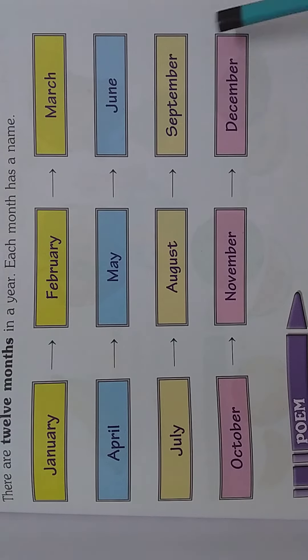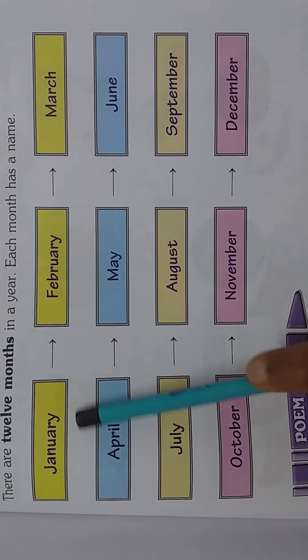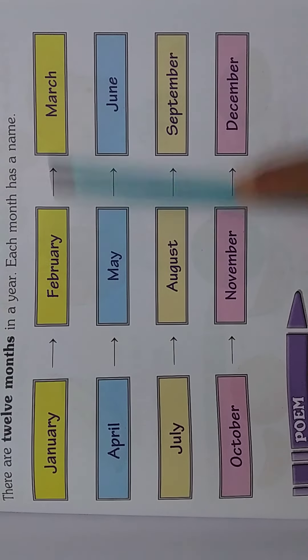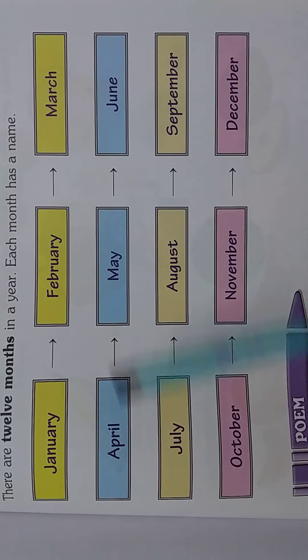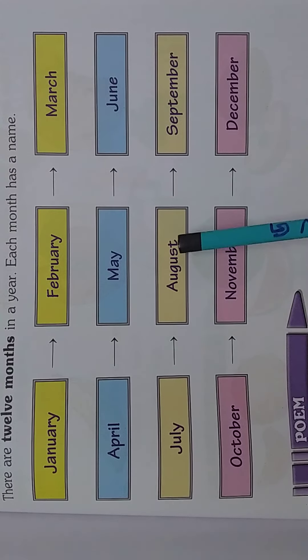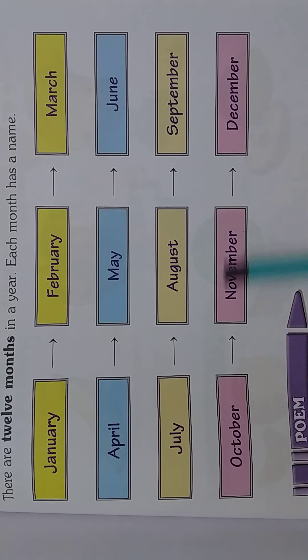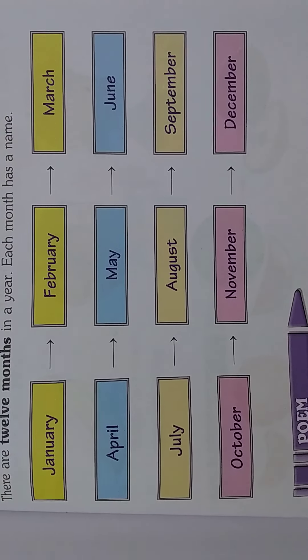These are the 12 months of the year. January, February, March, April, May, June, July, August, September, October, November and December.